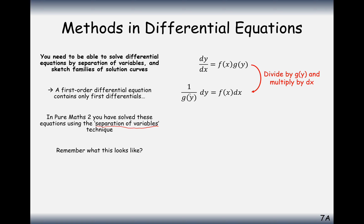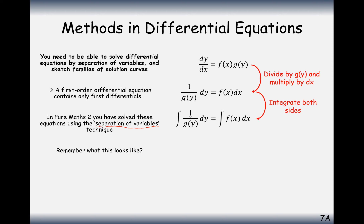We've moved y onto the side where dy is, and we've moved dx onto the side where the function of x is — all the y's are on the left, all the x's are on the right. Now we're going to integrate both sides: we integrate 1 over g(y) with respect to dy, and we integrate f(x) with respect to dx.